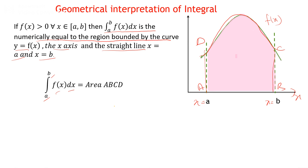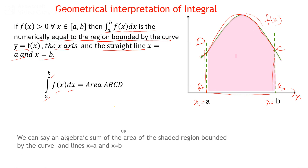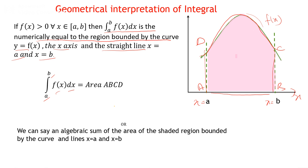Through integration you can find the area bounded below that curve and above the x-axis, or we can say it is the algebraic sum of the area of that particular shaded region bounded by that curve and the lines x = a and x = b.